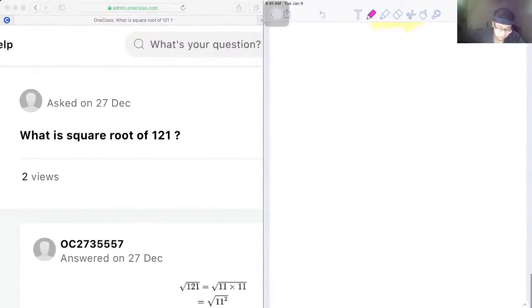Next, we have what is the square root of 121. The first step is to factor this, so 121 is equal to 11 times 11, which can also be written as 11 squared.